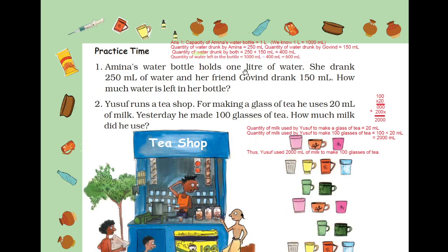Amina's water bottle holds 1 liter of water. She drank 250 ml of water and her friend Govind drank 150 ml. How much water is left in her bottle? Capacity of Amina's bottle is 1 liter, and you all know 1 liter equals 1000 ml. Quantity of water drunk by Amina equals 250 ml, and quantity of water drunk by Govind is 150 ml — both already given in the question.